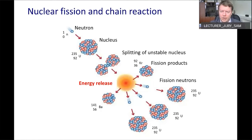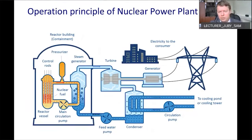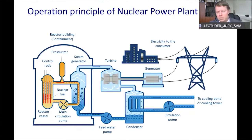You all know the principal scheme for producing electricity. We have a nuclear reactor and the first circuit — a closed circuit that does not spread water outside. The first circuit uses a steam generator, which produces steam. This steam is used for a turbine, and after the turbine, steam goes to a condenser. We then have feed water, which returns to the steam generator to produce more steam.